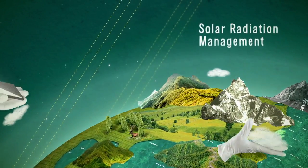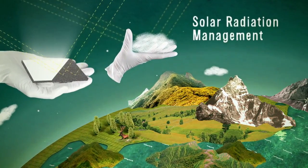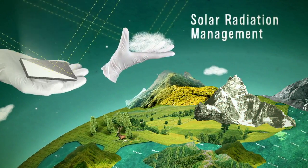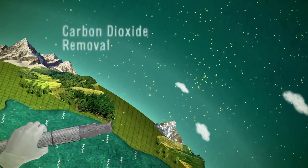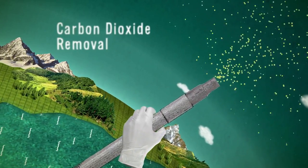Solar radiation management is the process of reflecting the sun's rays back into space, with the result that the climate heats up less. Carbon dioxide removal removes greenhouse gases such as carbon dioxide from the atmosphere.